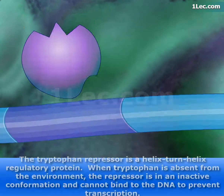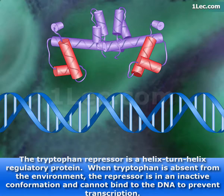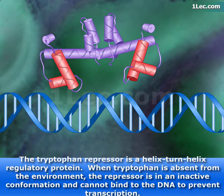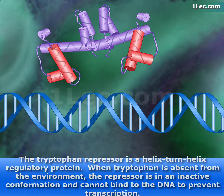The tryptophan repressor is a helix-turn-helix regulatory protein. When tryptophan is absent from the environment, the repressor is in an inactive conformation and cannot bind to the DNA to prevent transcription.